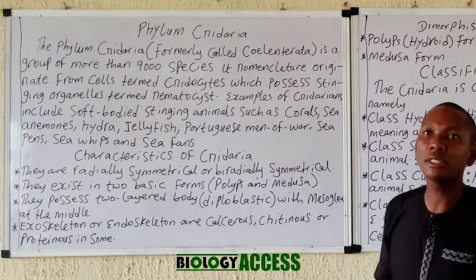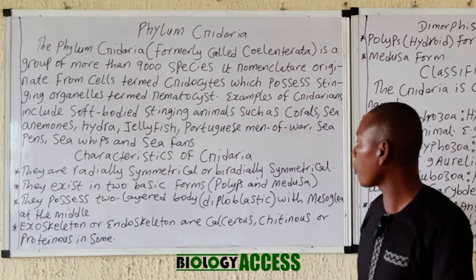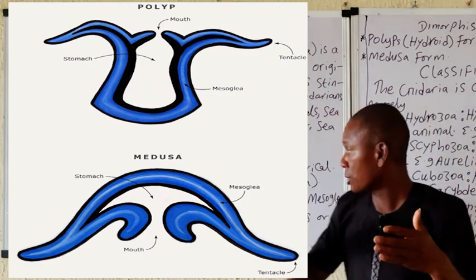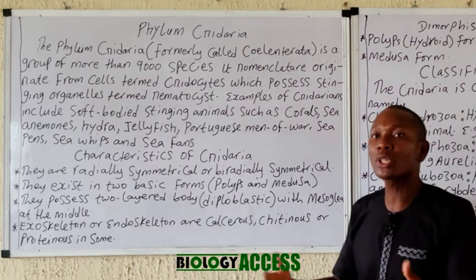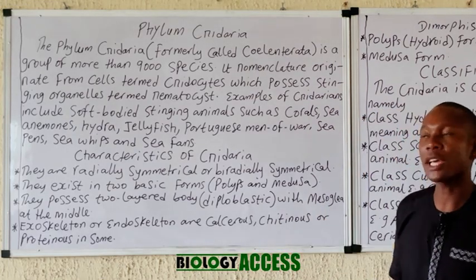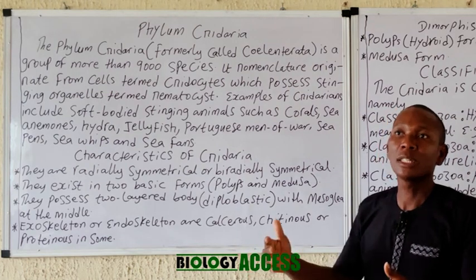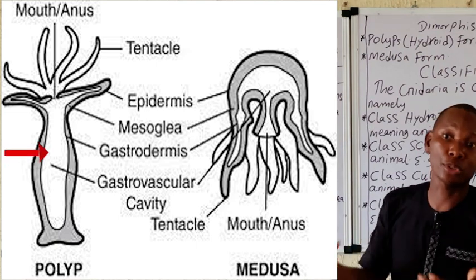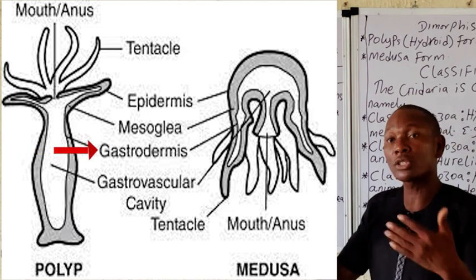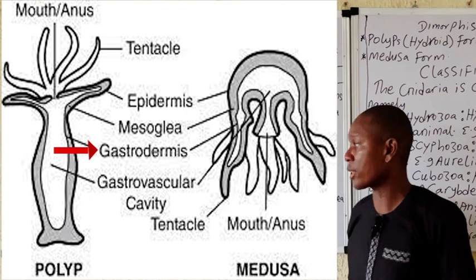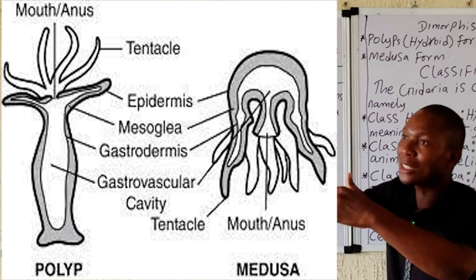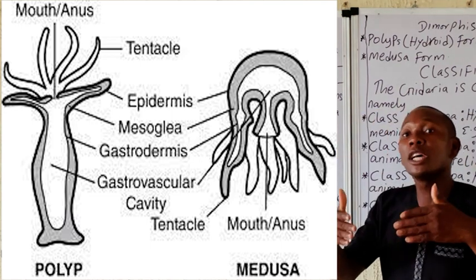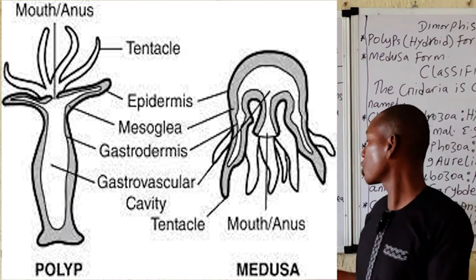They possess two basic body forms: the polyp form or the medusa form, both displayed on the board. Their body is made up of two layers — the epidermis and the endodermis. The outer layer is the epidermis, while the inner is the endodermis. Their exoskeleton or endoskeleton may be made up of calcareous material, proteinous material, or in some cases chitinous material.